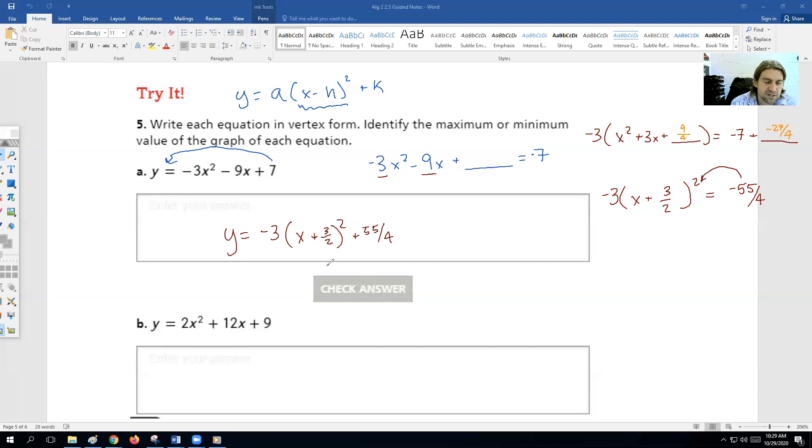So how we can take this and turn it into vertex form, you can actually see it's really close to what we have. We have y equals, here is our a is negative 3, x minus h, so h would be negative 3 over 2, so we'll still have plus 3 over 2 squared. And then to get our k, all we got to do is move this number back over to the spot, so plus 55 over 4. We can graph this on Desmos to double check our work here.